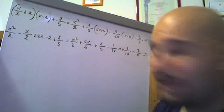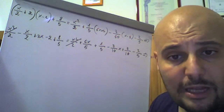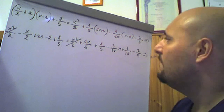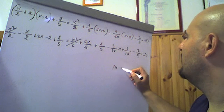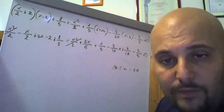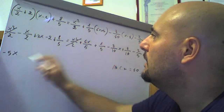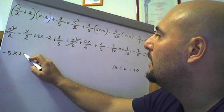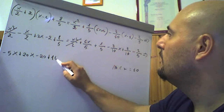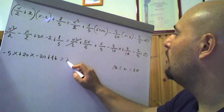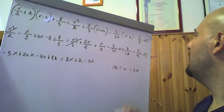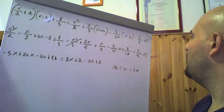Applico subito la regola della cancellazione: x²/2 e x²/2 se ne vanno essendo termini uguali in ambedue i membri. Passo direttamente al minimo comune multiplo: abbiamo denominatori 2, 1, 5, 10 e 5. Il minimo comune multiplo è 10. 10 diviso 2 fa 5 per -x fa -5x; 10 per 2x fa 20x; 10 per -2 fa -20; 10 diviso 5 fa 2 per 8 fa 16. Uguale: 10 diviso 5 fa 2 per 4x fa 8x; 2 per 1 fa 2; 10 diviso 10 fa 1 per -3x fa -3x; 1 per 3 fa 3; 2 per -2 fa -4.